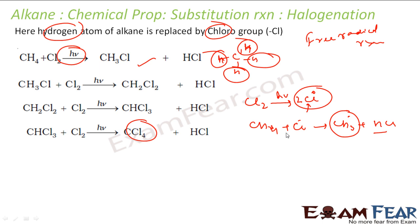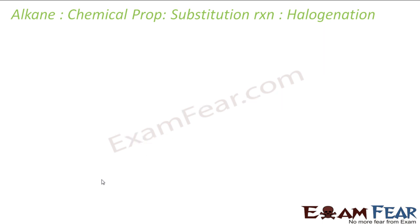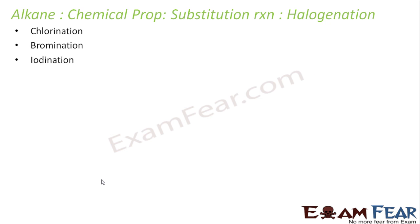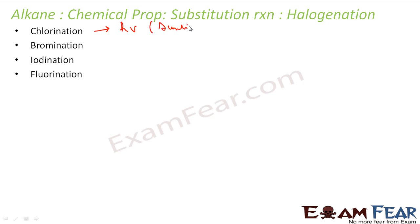This process keeps on happening — you get more and more free radicals, CH₂ free radicals and similar species. So you get these kinds of products. These halogenations are of different types: chlorination, bromination, and iodination. Chlorination happens in the presence of sunlight or UV rays.